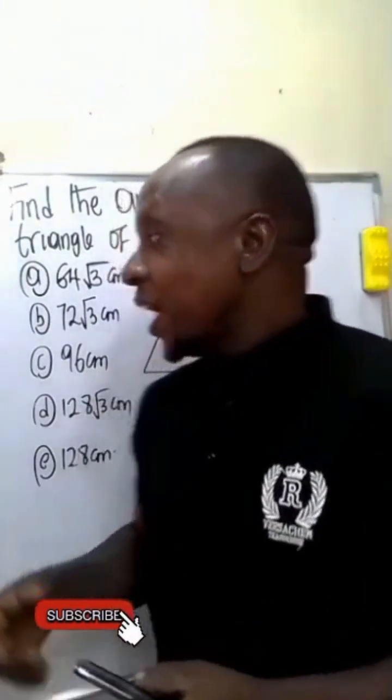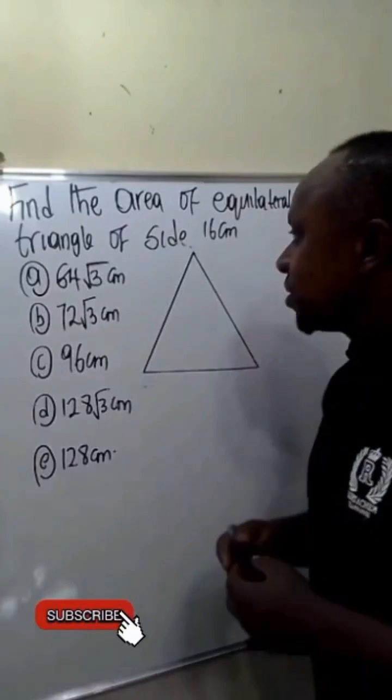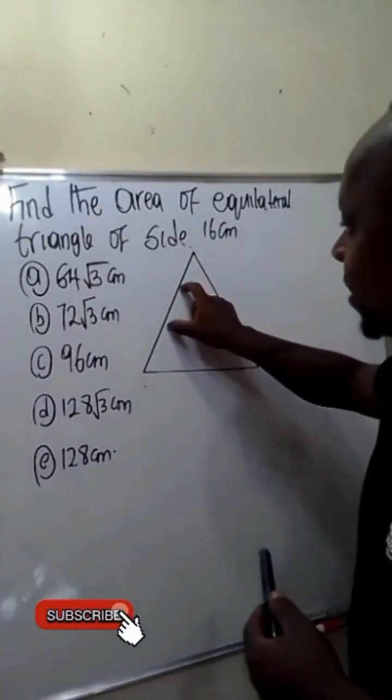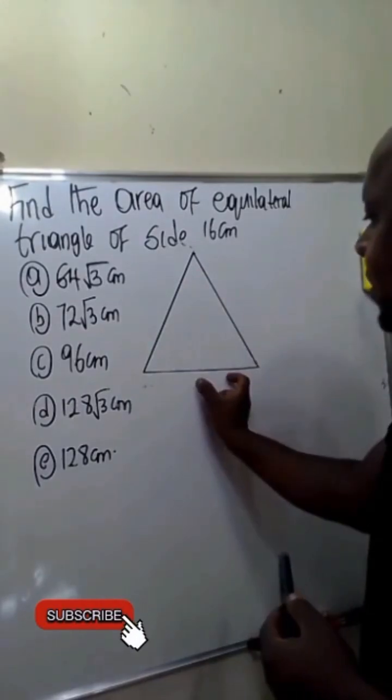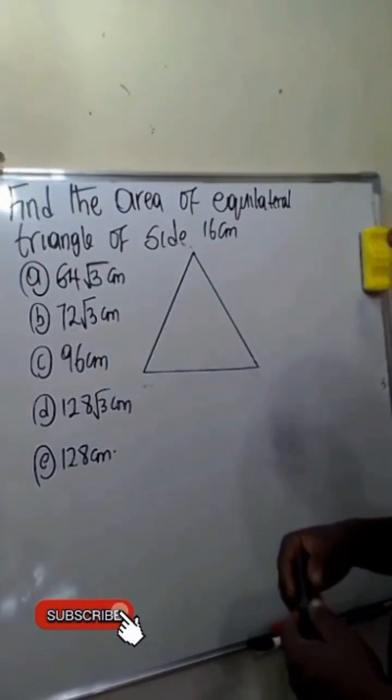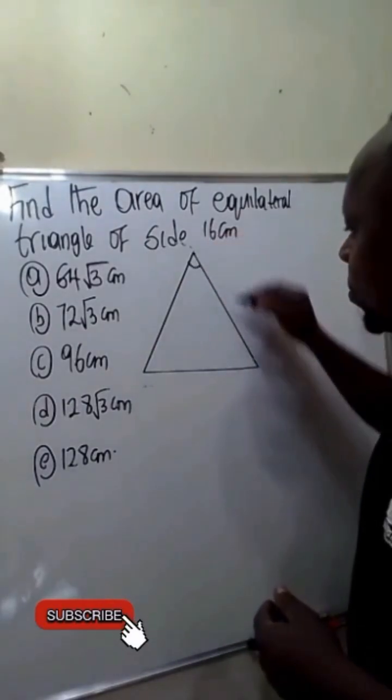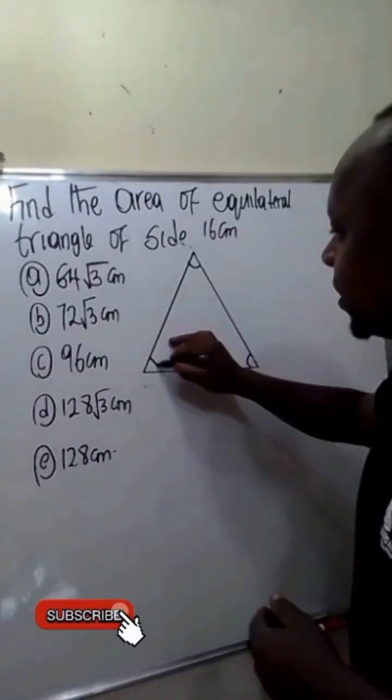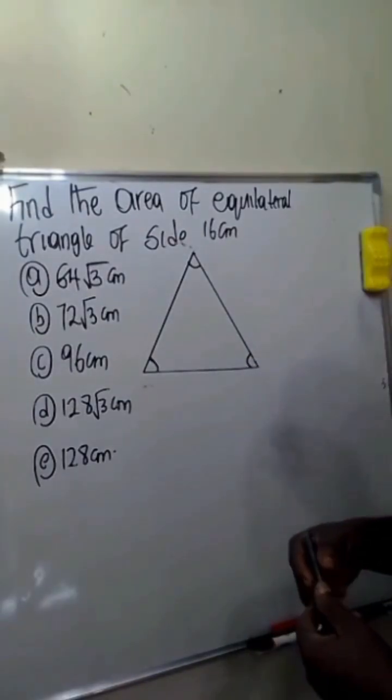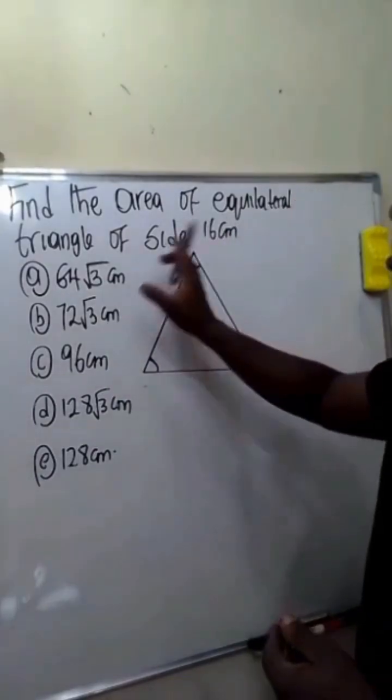By zooming, this is the equilateral triangle. It implies this side, this side, and this side must be equal. Also this angle, this angle, and this angle must also be equal.